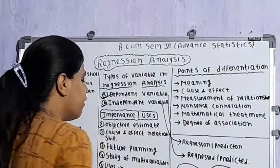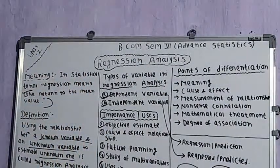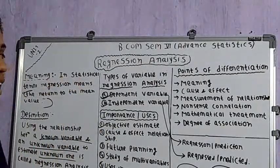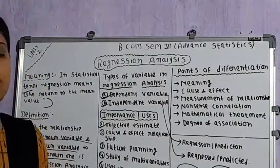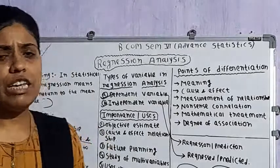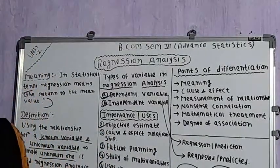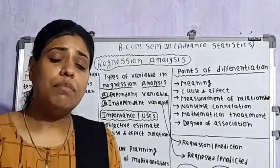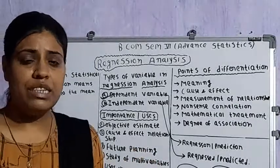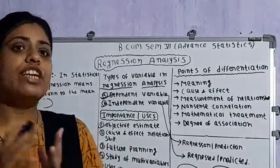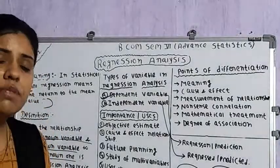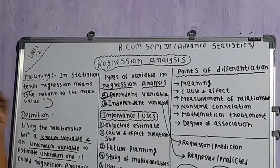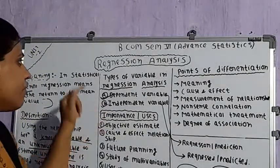Objective estimate means that with one known variable, we can estimate the value of another unknown variable. We establish a functional relationship between the two variables and convert it into the form of an equation, and this equation helps us estimate the value of the unknown variable. That is why regression analysis helps in objective estimation.